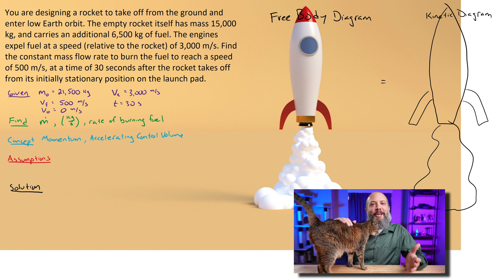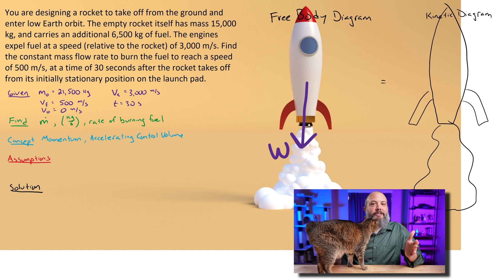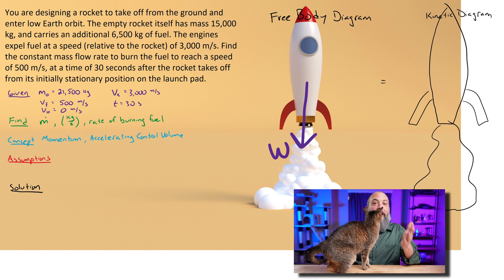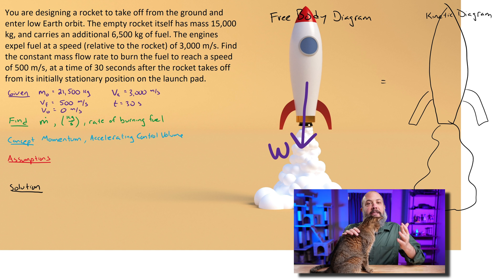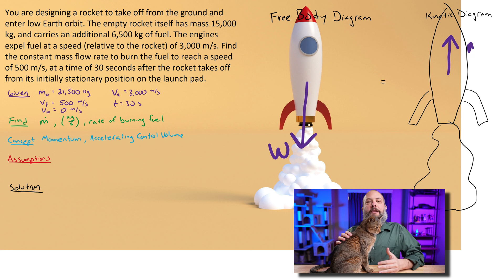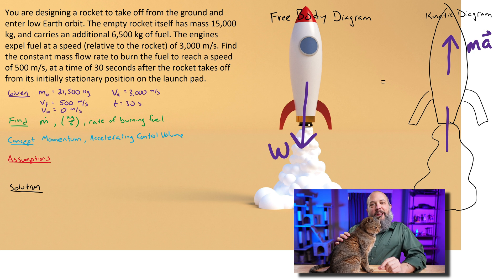On your free body diagram, you've got all of your external forces of which I'm going to write weight, the weight of the rocket. The kinetic diagram is where you put all of your changes in momentum. This is either ma or m dot v.